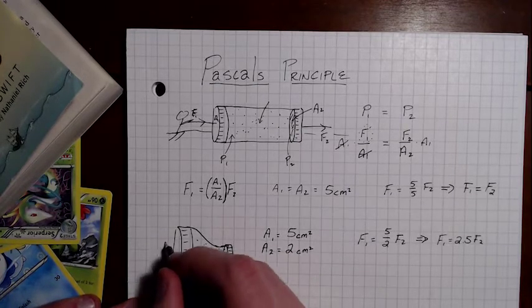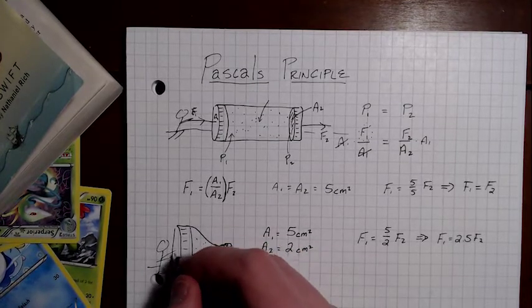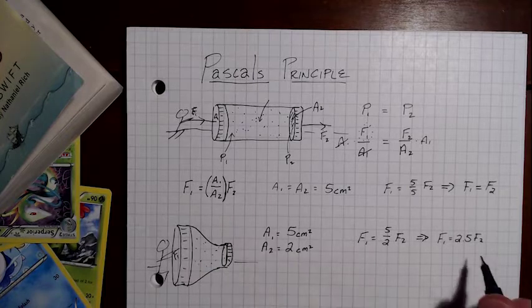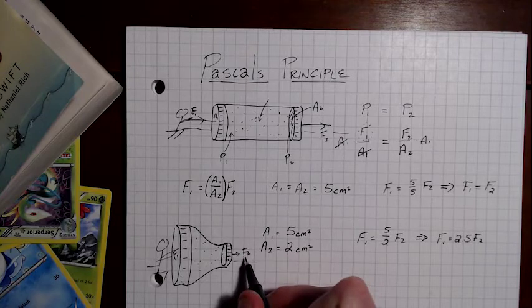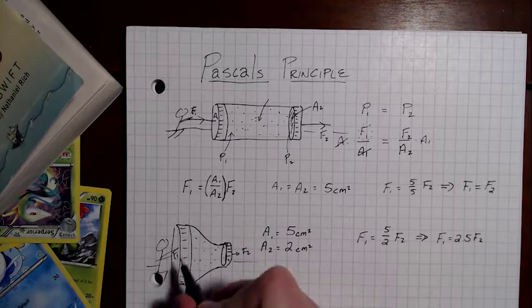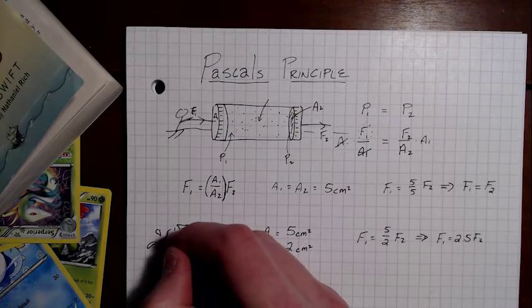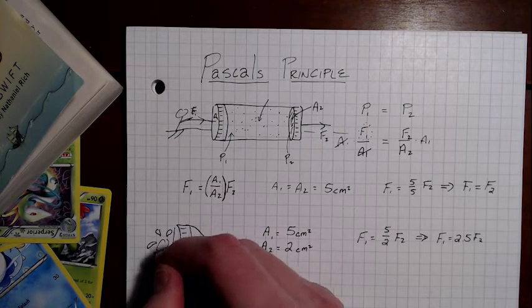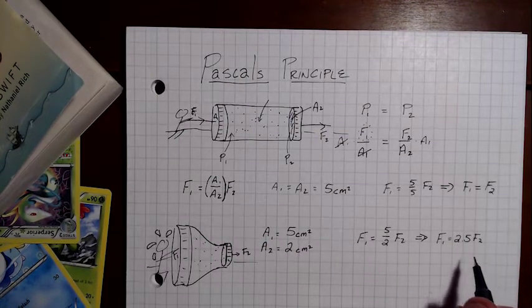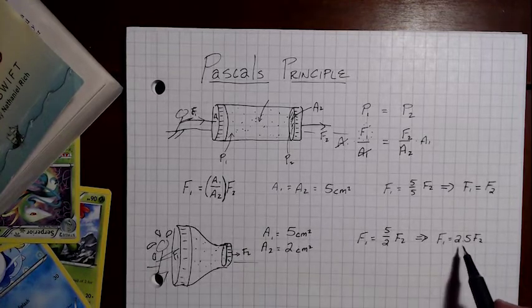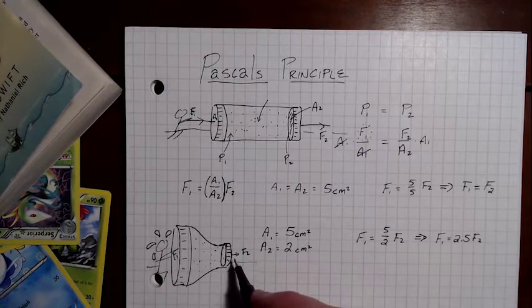So if we're over here pushing, this is telling us that F1 over here, the force that we're applying, is going to be 2.5 times the amount of F2, or the force that's put out. That means that if we're pushing on the big end here, we are going to be sweating. We're going to be working very, very hard. We have to apply a very large force just so that the force over here is small. F1, the force that we're putting in, is going to have to be 2.5 times greater than force 2.